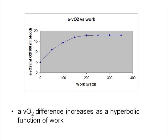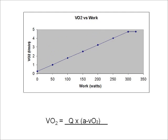Next slide is AVO2 versus work. AVO2 difference increases as a hyperbolic function of work. That difference in arterial and venous O2 increases as muscle needs more oxygen. Next slide: VO2 versus work. The Fick equation is VO2 equals Q times AVO2 difference. You'll see that VO2 has a positive direct linear relationship with work until you hit max, and then it levels off.